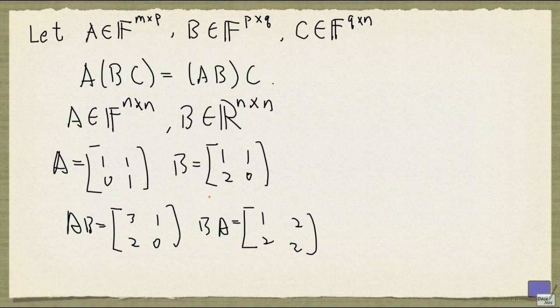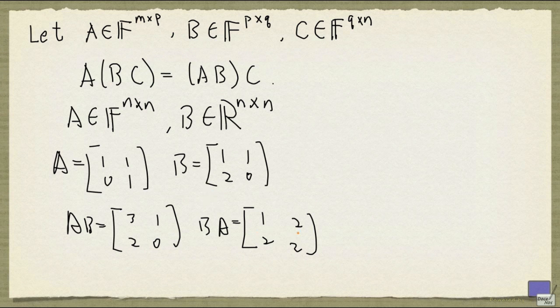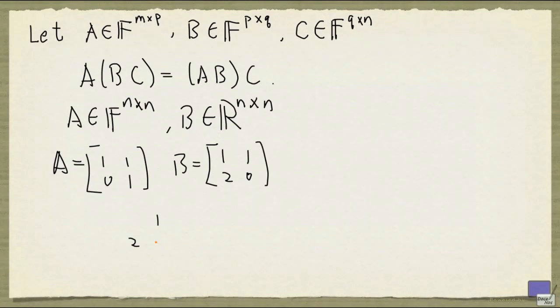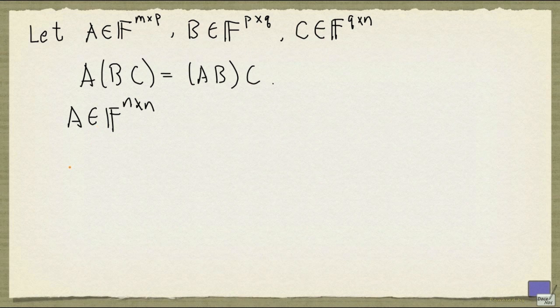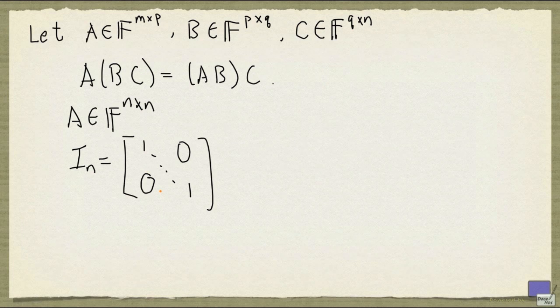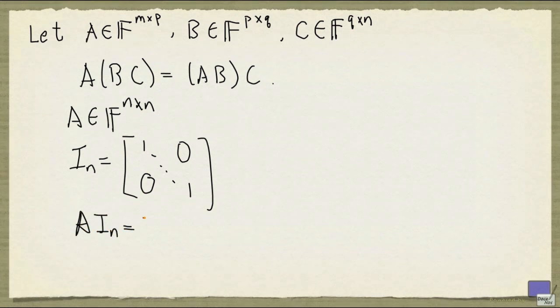However, there do exist pairs of matrices that commute under multiplication. And the simplest one to see is when one of the matrices is the identity matrix. So suppose that A is N by N, and where IN denote the N by N identity matrix, so it's the matrix with 1s on the diagonal and 0 everywhere else. Then A times IN equals IN times A, and that will equal to A.